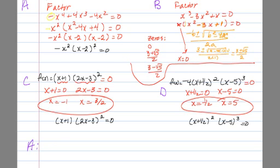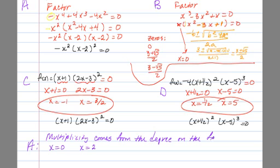That x minus 2, x minus 2 could be written as x minus 2 squared. So the two zeros we came up with were x equals 0 and x equals 2. What's going to be the multiplicity on each of these zeros? The multiplicity comes from the degree on the factor. The degree on that factor was 2, so the multiplicity on this zero is 2.